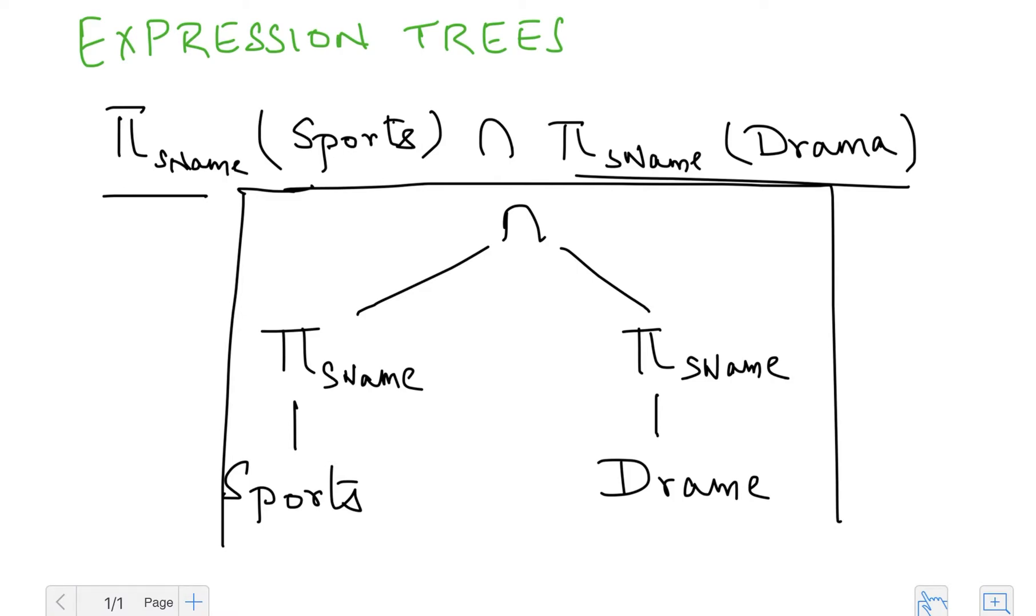who are part of some sports stream and also in the drama club. So basically in an expression tree, any node would be an operator and it would have as its children the operands that it acts on.